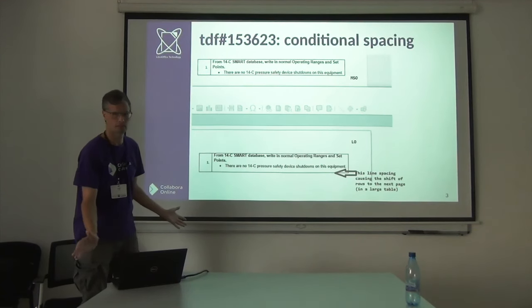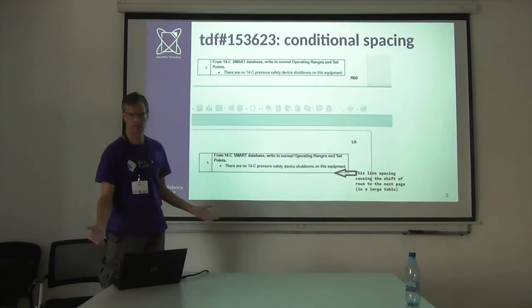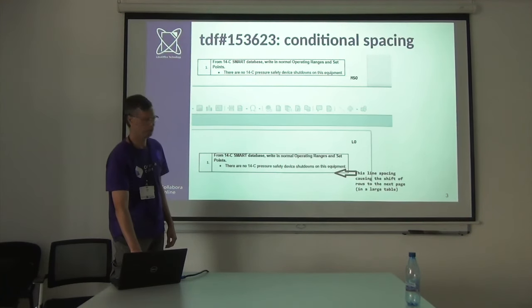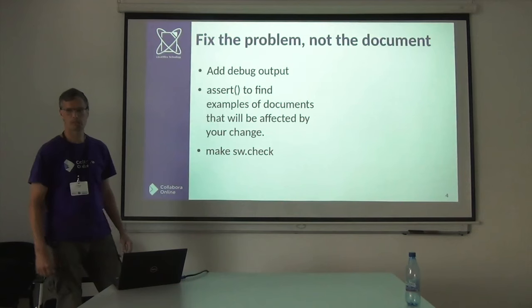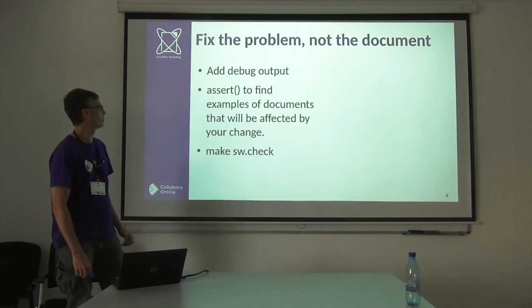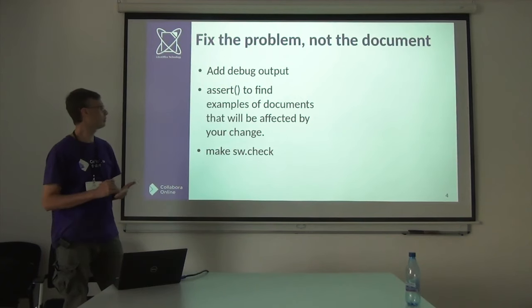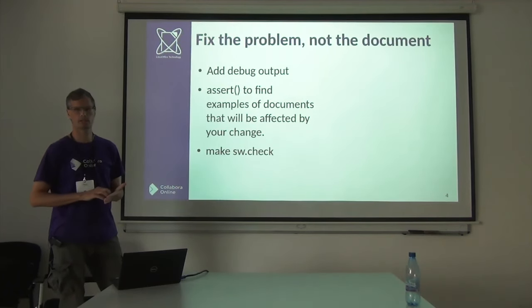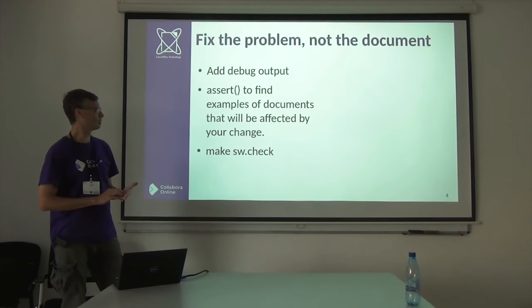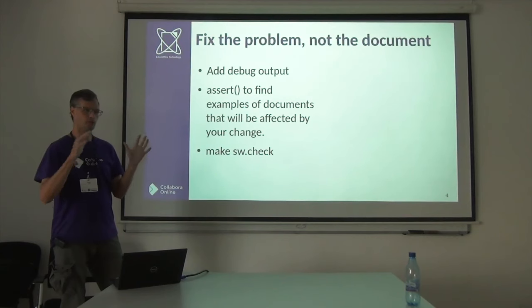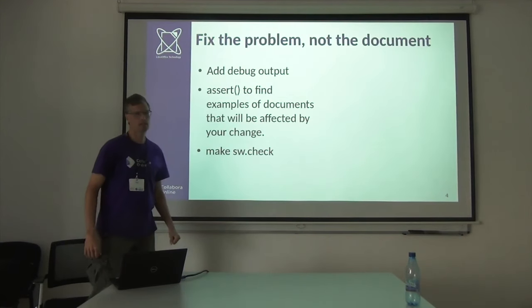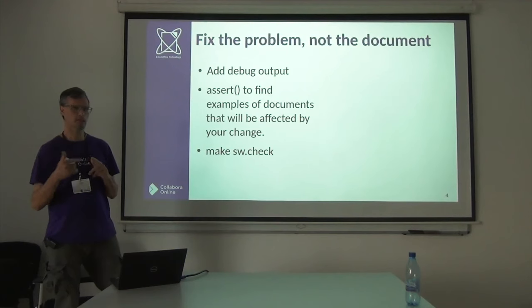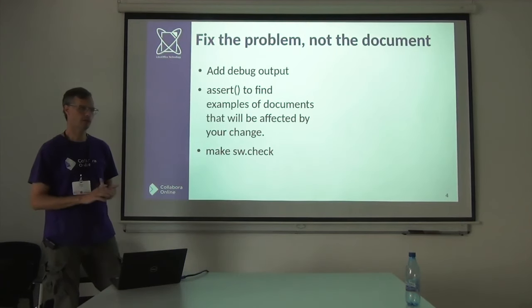It passed all the make checks and all the unit tests attached to the bug report — so is that enough? What I did is I added some debug output, and then I asserted to find any examples in our existing unit tests that would have been changed. We're saying don't add any space, but where are we actually adding space? Then I ran a make check, going through all the existing unit tests that have been piling up over the years, looking for other documents with the exact same situation I'm trying to fix.